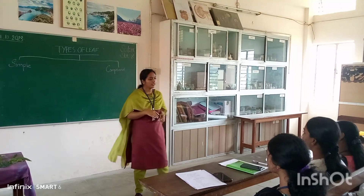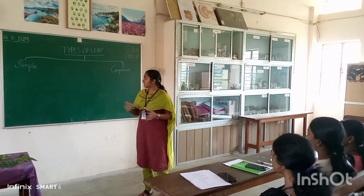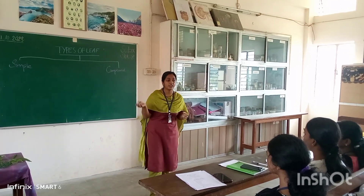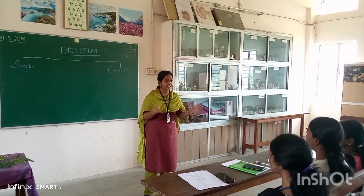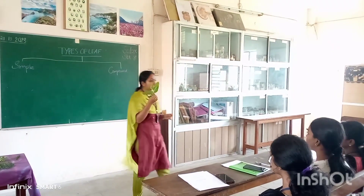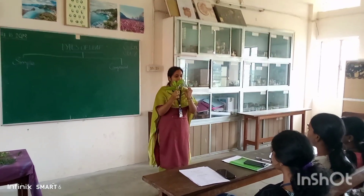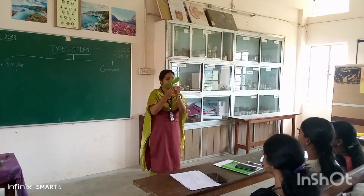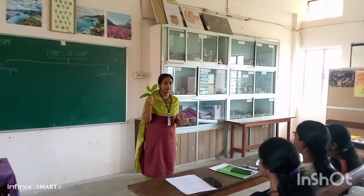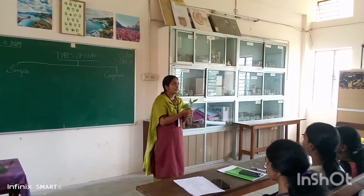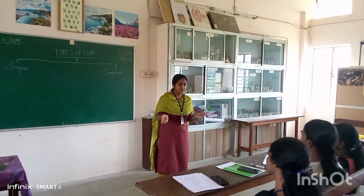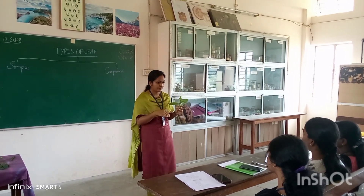First we are discussing about simple leaf. Simple leaves are the lamina of a leaf that are connected to the main stem by a petiole. I will show the simple leaf. This is the lamina which is connected to the main stem by a petiole. Examples are guava, pepper, and mango. These leaves are simple leaves.